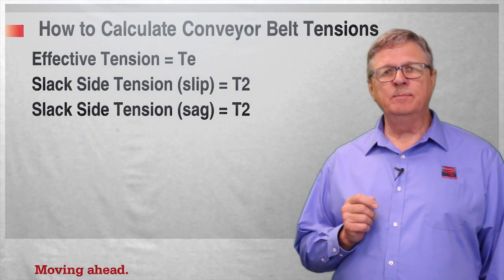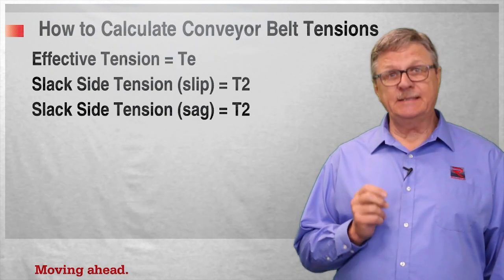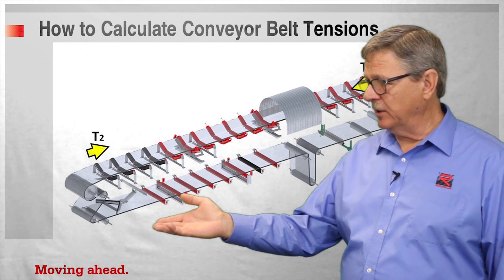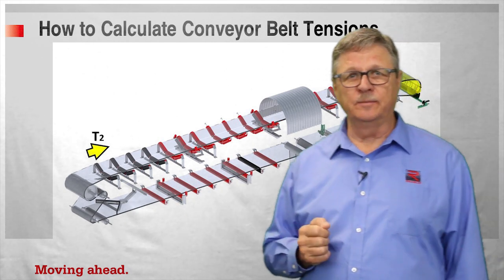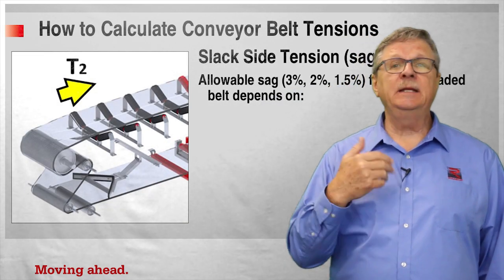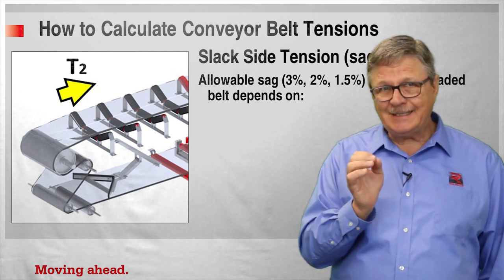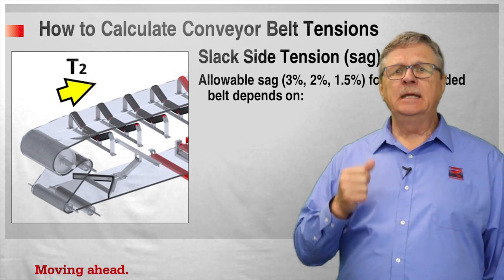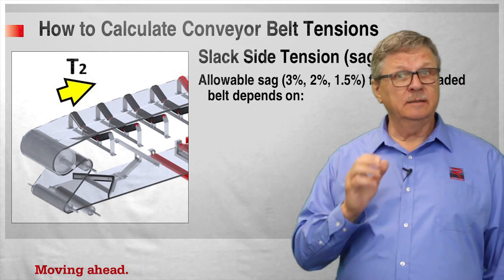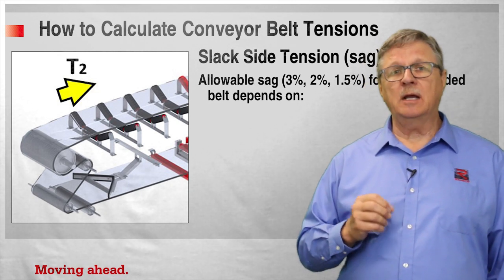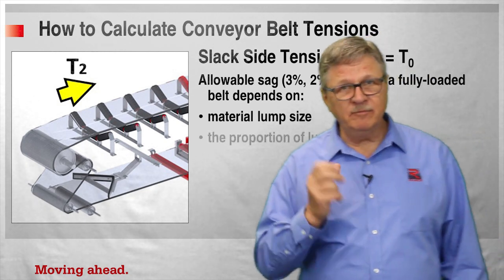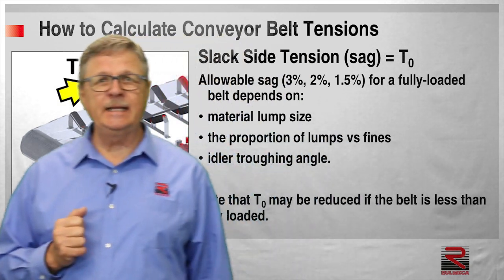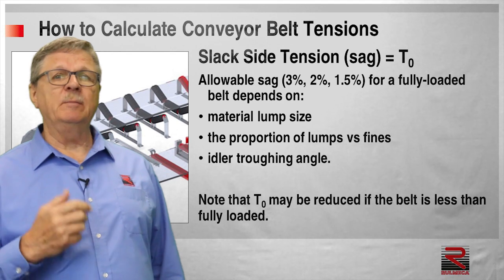Now let's consider how to calculate minimum belt tension so as to prevent sag. Sag is a phenomenon which can occur at the point of minimum tension in the carrying strand of a conveyor belt — on an inclined conveyor, it would be in the vicinity of the loading zone. The CEMA historical method allows the designer to select an appropriate percentage of sag between the carrying idlers to prevent lumps of material from coming out of the conveyor belt. Values of 3%, 2%, and 1.5% sag are provided, based on material lump size, the proportion of lumps versus fines, and the idler troughing angle. Note that T0, the minimum tension to prevent sag, may be reduced if the belt is less than fully loaded.